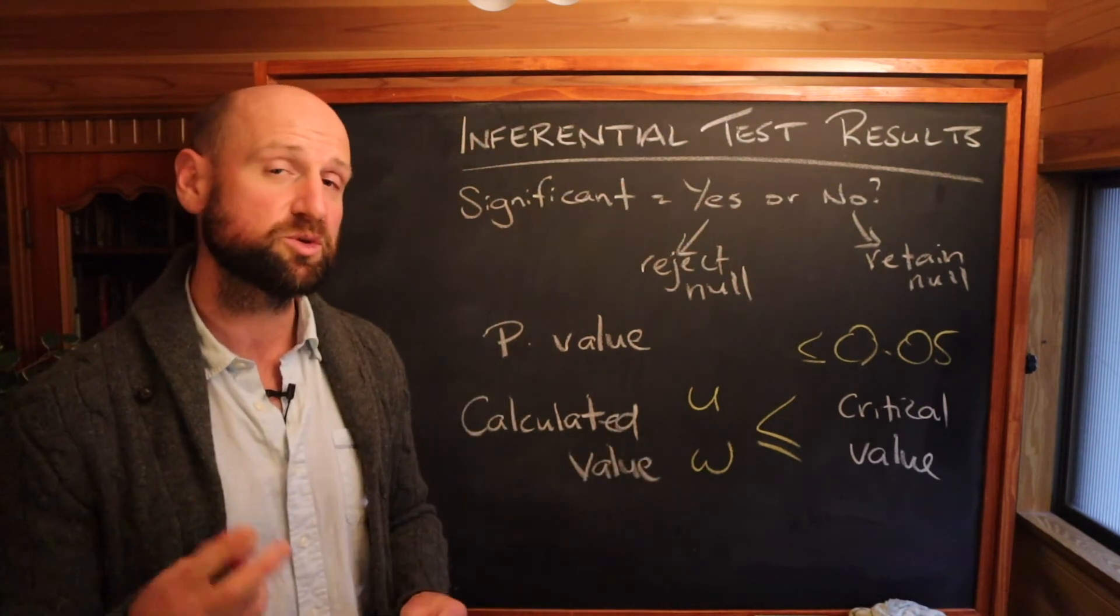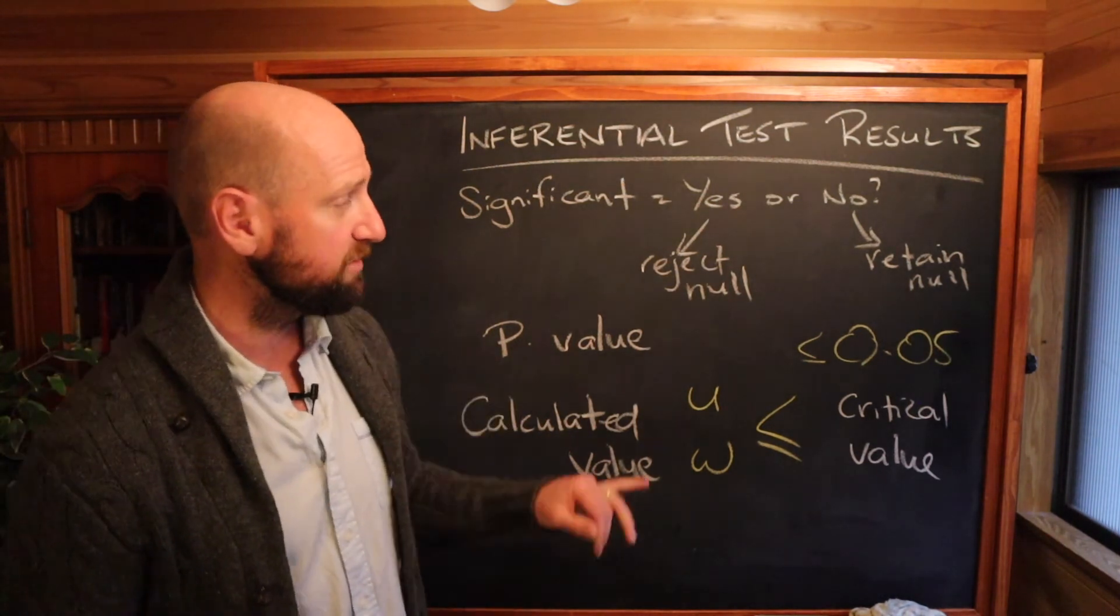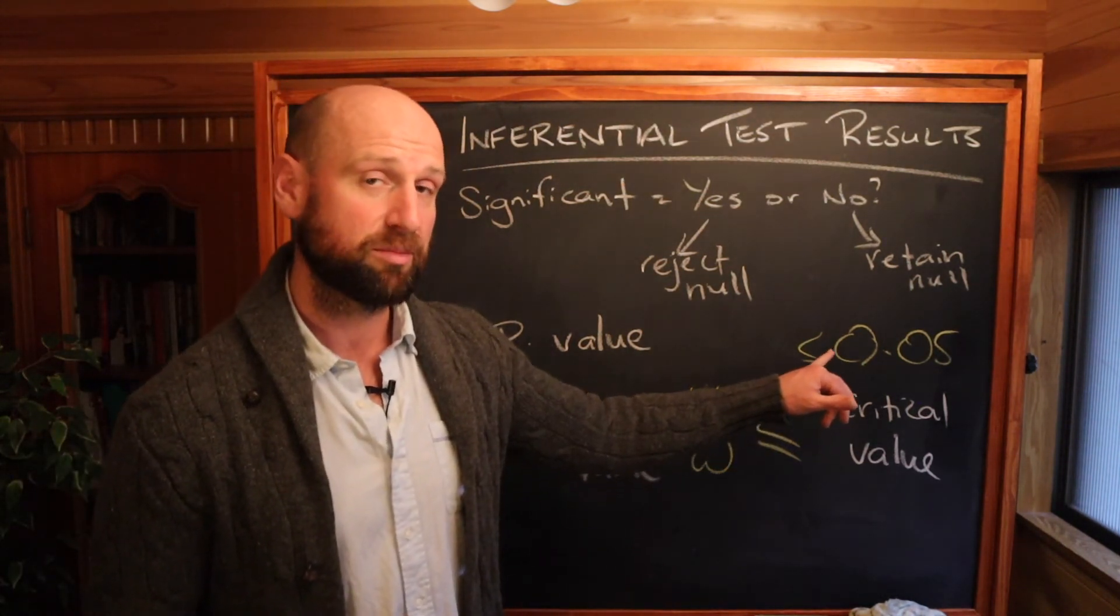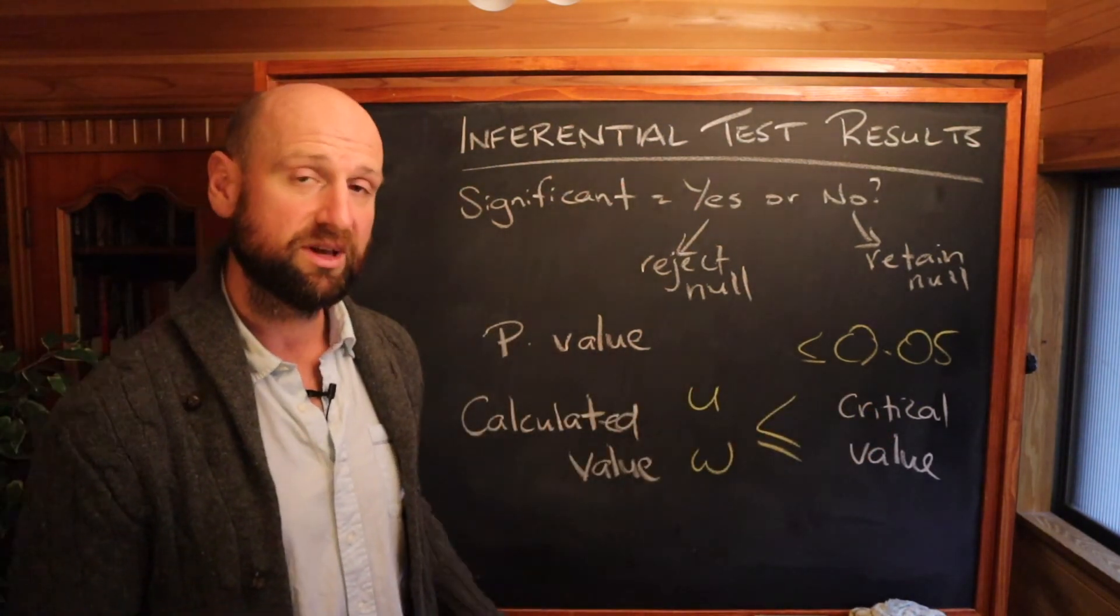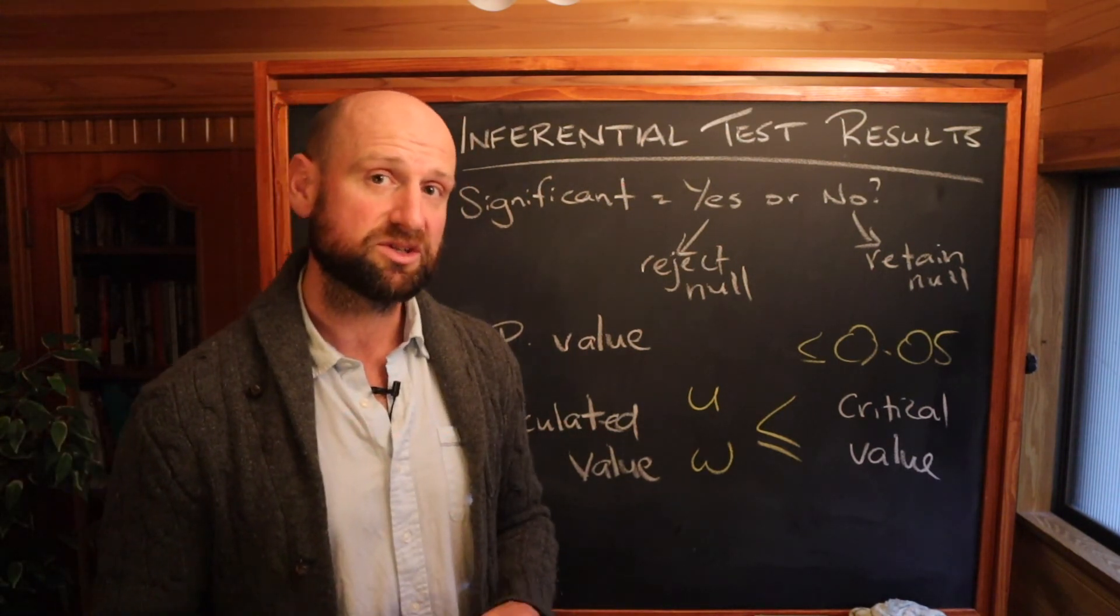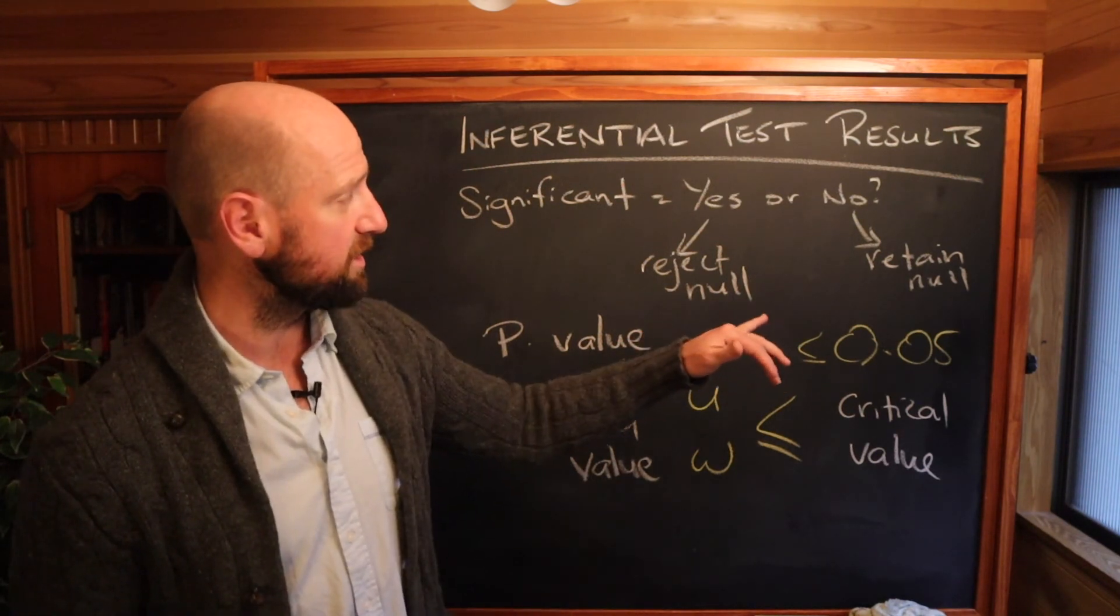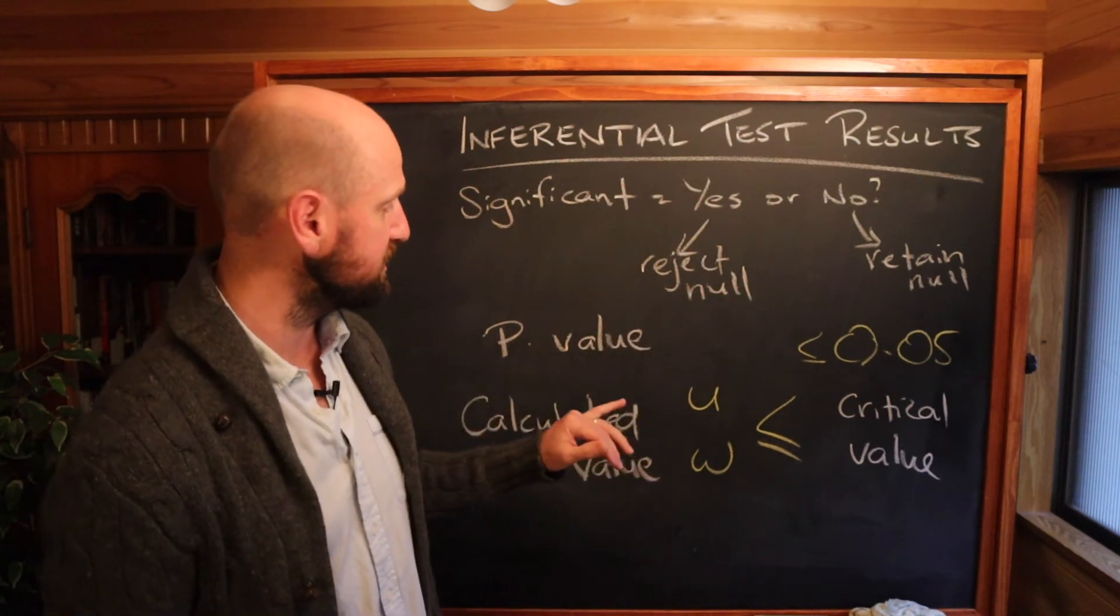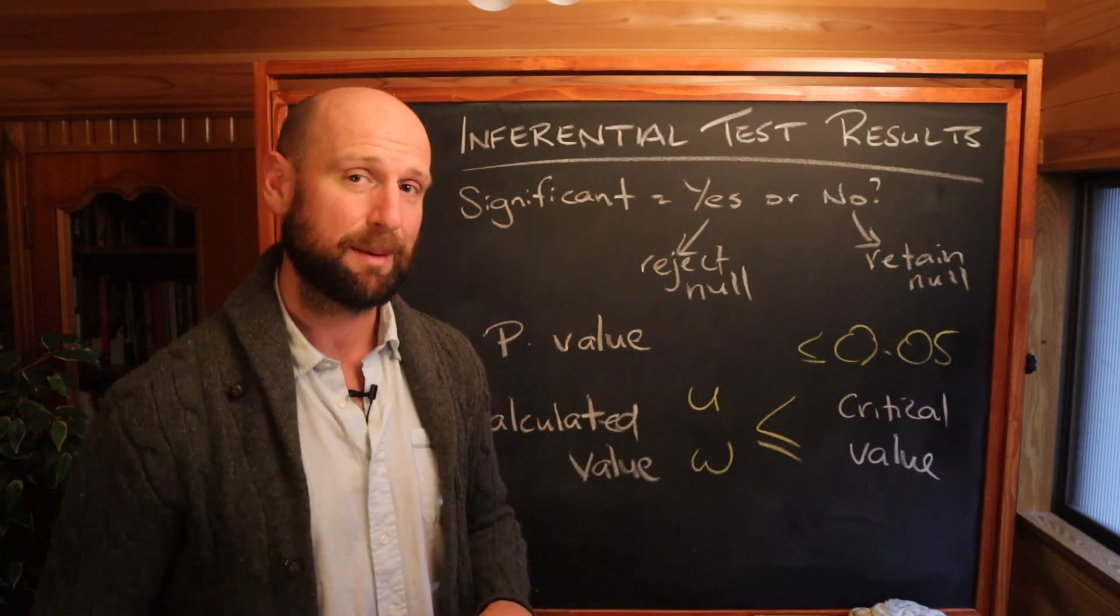All right, there we have really simple the two ways that you can interpret your results to see if they're significant. Based on your p-value, is it equal to or less than the probability value of 0.05? And based on your calculated value, is it equal to or less than the critical value? I expect to see my students showing that they know why they accepted, rejected or retained their null hypothesis based on these relationships. Hopefully that makes sense.